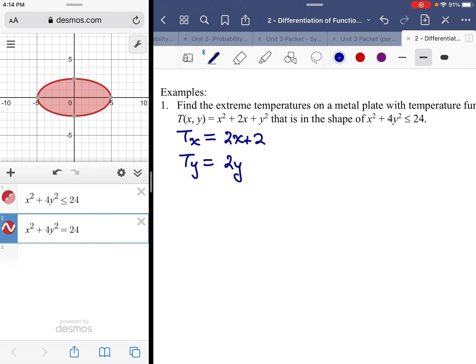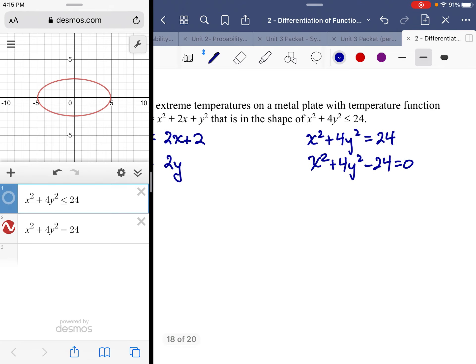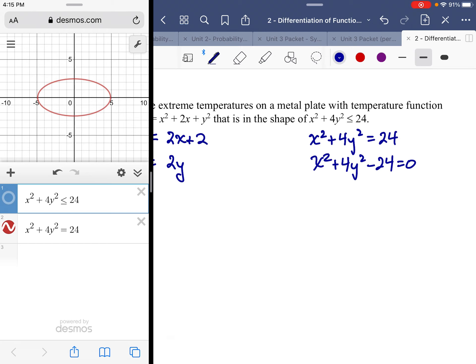We also need a boundary function. You can see that the boundary is a shaded ellipse in the Desmos calculator here. The boundary itself is really the border of that ellipse, which takes the form x² + 4y² = 24. If I want to create a multivariable function out of this, I set it equal to zero: x² + 4y² - 24 = 0.